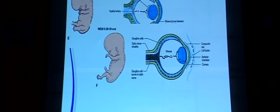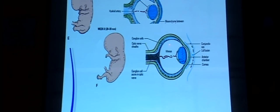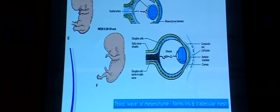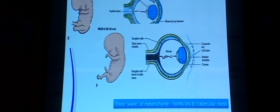The lens is developing, the eyelid folds grow and fuse together with the potential conjunctival space underneath. After this comes the third wave of mesenchyme, which results in formation of the iris and the substance of the trabecular meshwork.